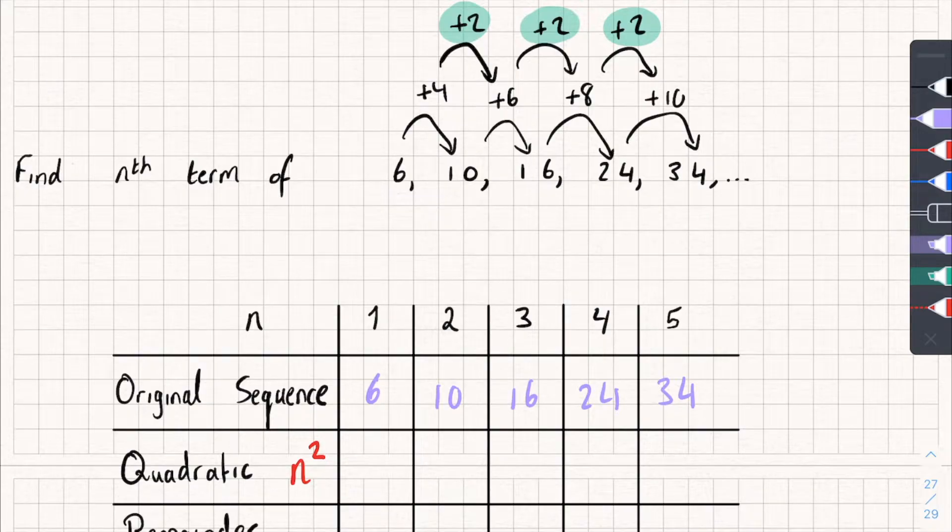Now, here, quadratic, I've told you where we got the n squared from. I'm just going to substitute in n equals 1, 2, 3, and 4 into that. So, when n is 1, n squared is 1. When n is 2, n squared is 4, and so on. So, I'll fill these in now.